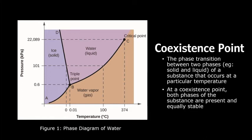For instance, looking at this diagram, we see that water melts/freezes at zero degrees Celsius at one atmosphere. At a coexistence point, both phases of the substance are present, as both phases are equally stable.